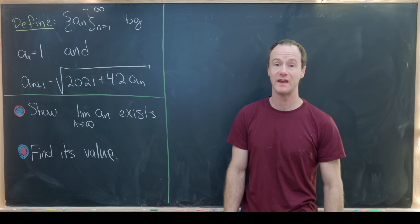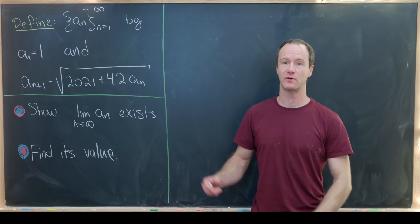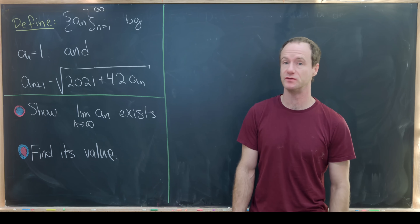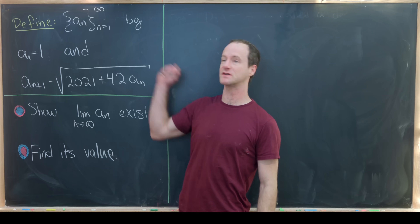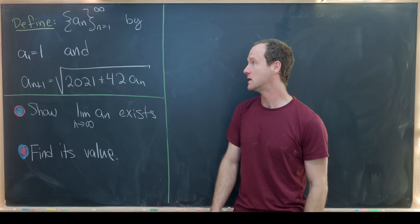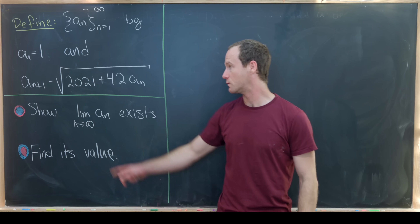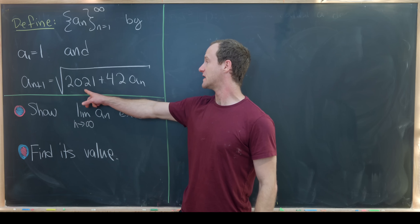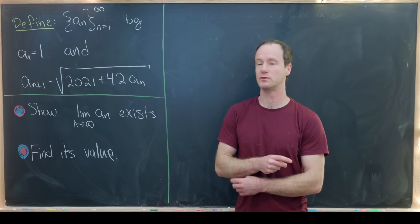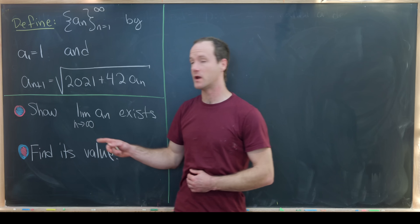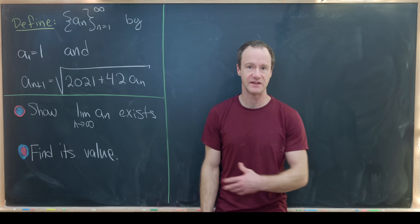Here we have a problem involving a recursively defined sequence, inspired by problems you might see in a calculus 2 class. We define our sequence a_n by a_1 equals 1 as our seed, and then a_{n+1} equals the square root of 2021 plus 42·a_n, for all n ≥ 1. So we use that seed to define a_2, a_3, a_4, and so on.